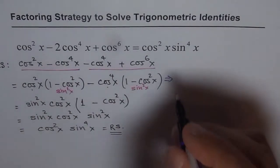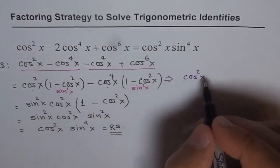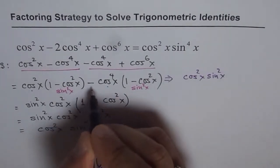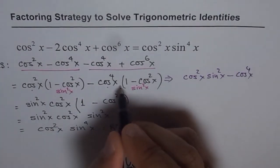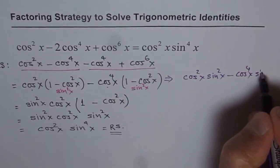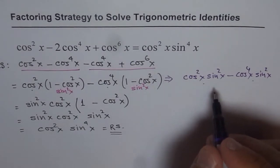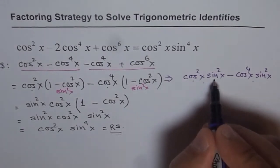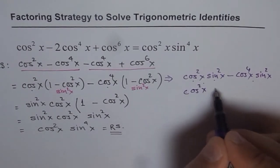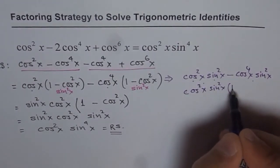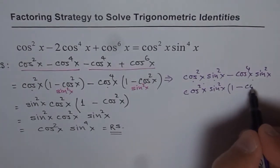This step was cos²x(1 - cos²x), and as you know, 1 - cos²x is sin²x. Minus we have cos⁴x(1 - cos²x), which is also sin²x. Now if you see these 2 terms, what are the common factors? We can factor cos²x and sin²x. So we factor cos²x sin²x, which gives us 1 minus... when you divide by cos²x sin²x you get cos²x.